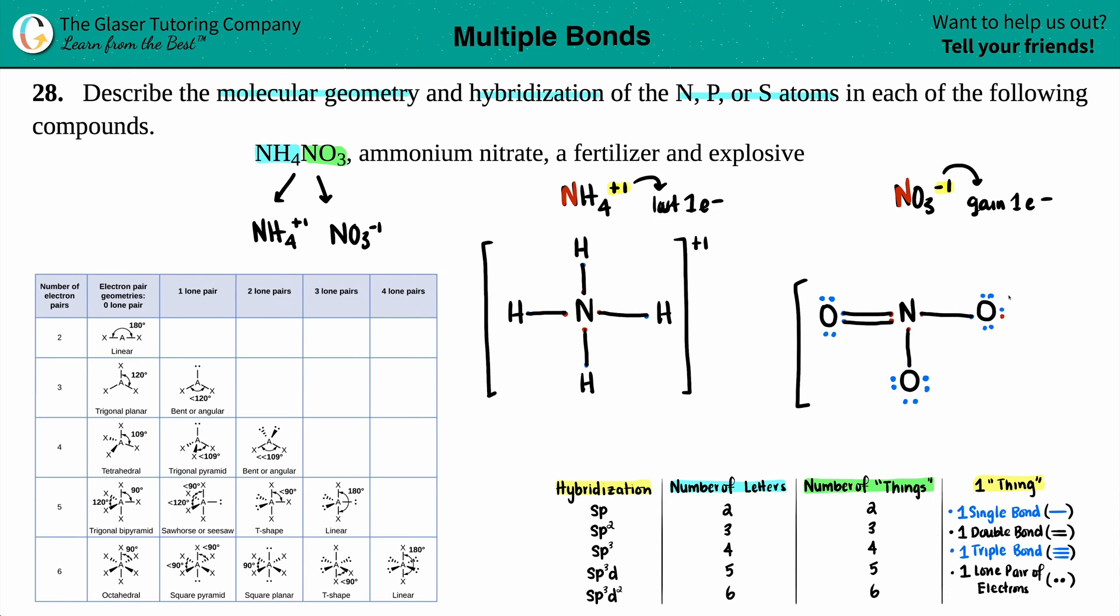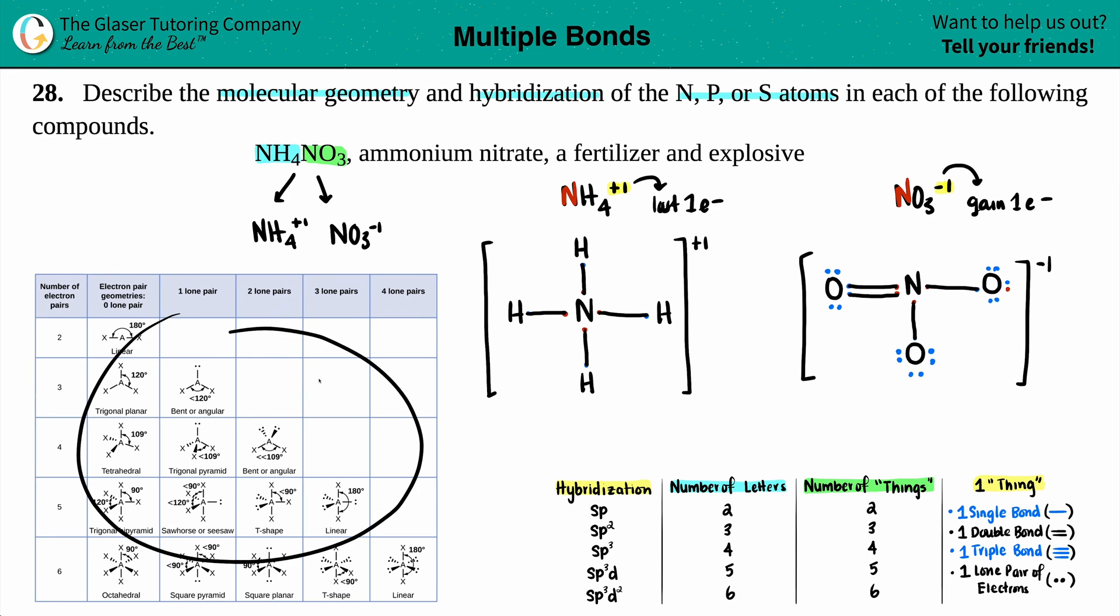This is done. I just have to bracket it and put a negative one. So now I have my two compounds all ready to go. I got my Lewis structures, and now let's find the molecular geometry for each of them. To find the molecular geometry, you probably are going to have to memorize this chart. I don't think your teacher or professor will give this to you on a test or quiz. I'm going to work you through towards picking the right one.